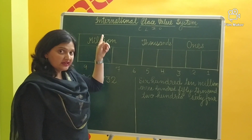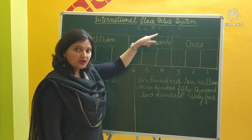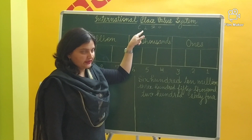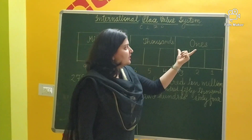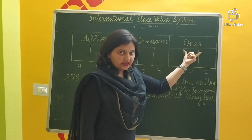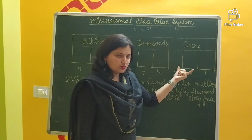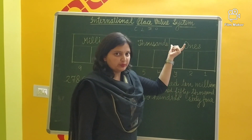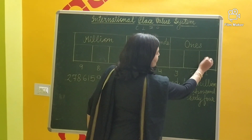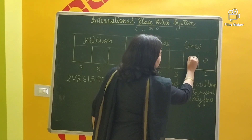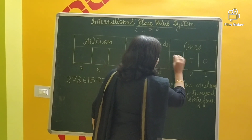As compared to the Indian number system where we use 4 different periods, in the international system the ones period has 3 different places, which is similar to the previous system: ones, tens, and hundreds.